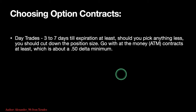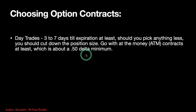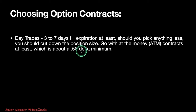Choosing an options contract is something people struggle with. For day trades, go with 3 to 7 days till expiration at least. If you pick anything less, cut down your position size. Go with at the money contracts at least, which should have a 50 delta minimum — keep it at 50 or higher if you can.